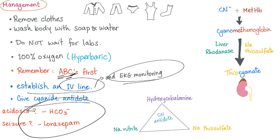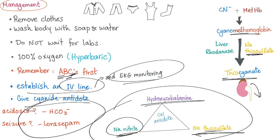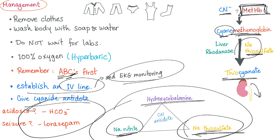Give the cyanide antidote — the famous triad: hydroxycobalamin, sodium nitrite, and sodium thiosulfate. Sodium thiosulfate helps convert cyanomethemoglobin to thiocyanate, which is excreted in the urine. Sodium nitrite converts normal hemoglobin into methemoglobin, so the methemoglobin can combine with cyanide forming cyanomethemoglobin; then sodium thiosulfate converts it to thiocyanate, excreted in the urine.